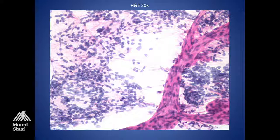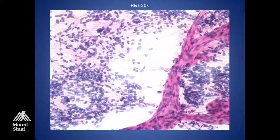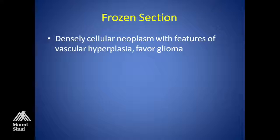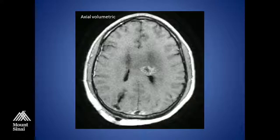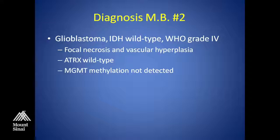If you call it endothelial proliferation or vascular proliferation, this is atypical. On frozen it's not definitive for vascular hyperplasia, but it's a clue. If they think it's a high-grade lesion and I see this, I'll say it's concerning for a high-grade lesion. So this is a densely cellular neoplasm with features of vascular hyperplasia, favor glioma — I would actually say favor glioblastoma in this case. The diagnosis was a glioblastoma: IDH wild type, WHO grade 4, with focal necrosis and vascular hyperplasia on permanent section. ATRX was wild type, and MGMT methylation was not detected.